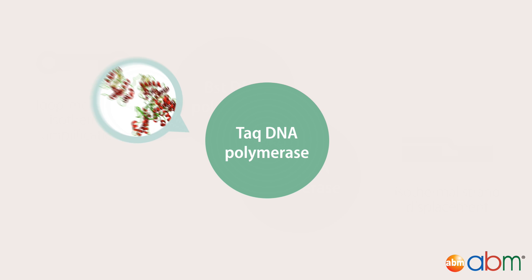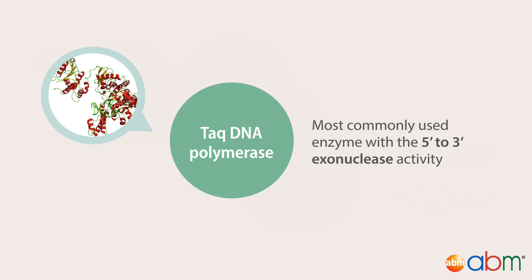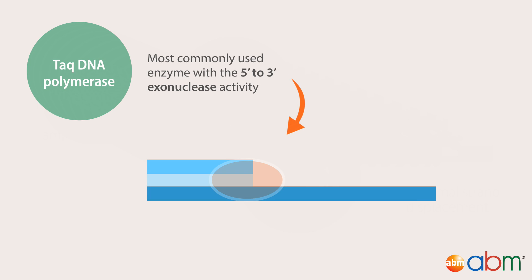TAC DNA polymerase is the most commonly used enzyme with the 5' to 3' exonuclease activity. The 5' to 3' exonuclease activity produces DNA with sticky ends and the PCR products can be used for TA cloning.